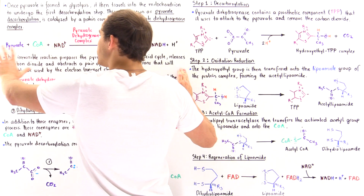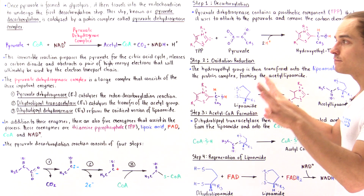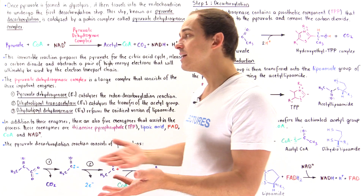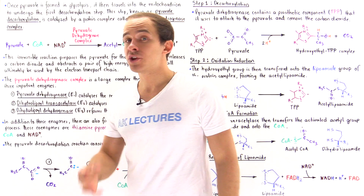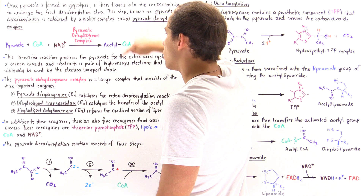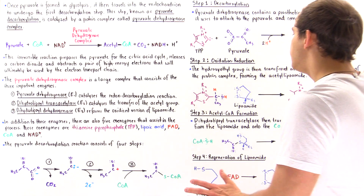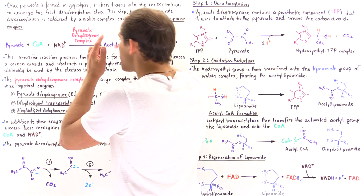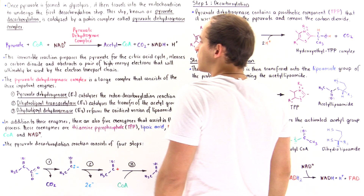Although this net reaction looks simple, it's not actually that simple. It involves different types of enzymes and steps — four steps in total — and three of those steps are required to form the acetyl coenzyme A complex. Before looking at the details of these four steps, let's discuss what components we find in the pyruvate dehydrogenase complex.